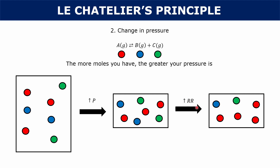So in this case the reverse reaction would increase. On the other hand, if you decrease the pressure by putting all these molecules in a bigger container, the system asks: I've decreased my pressure — how do I increase it again? In this case, you would increase the forward reaction to have more moles in the chamber, which would work to increase the pressure. Depending on your reaction, you might be increasing the reverse or the forward reaction based on whether you've increased or decreased your pressure. This will change the equilibrium constant.